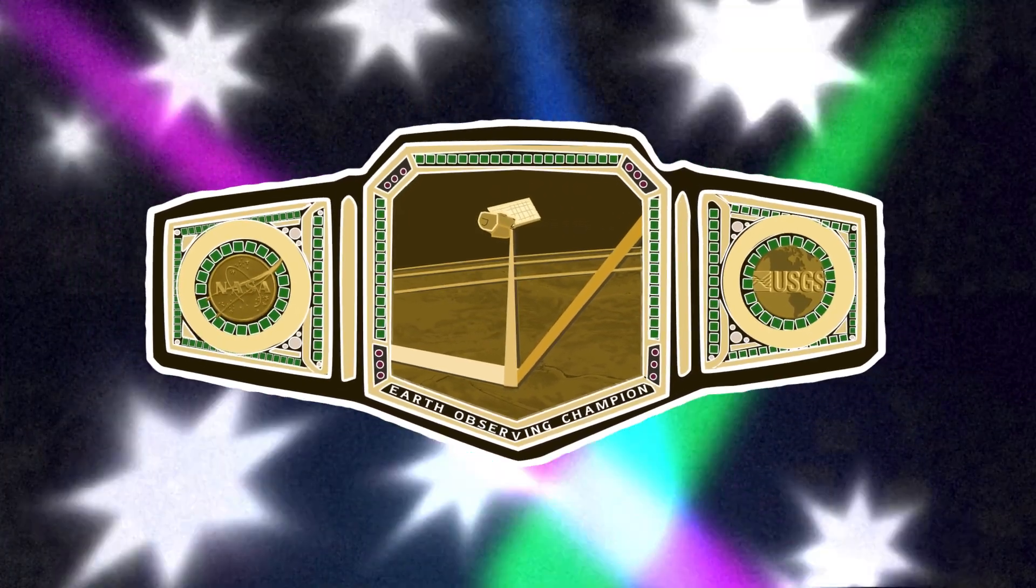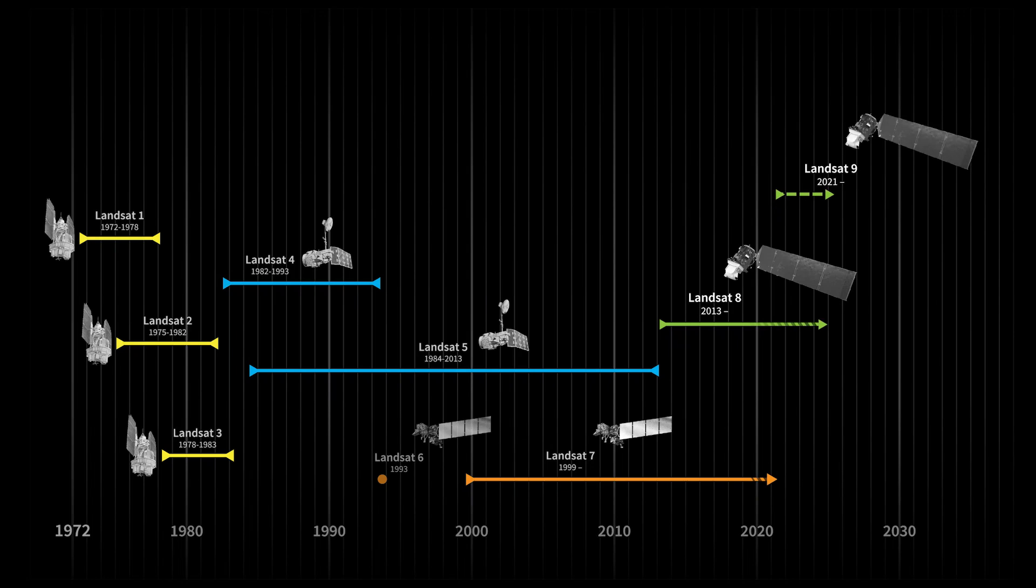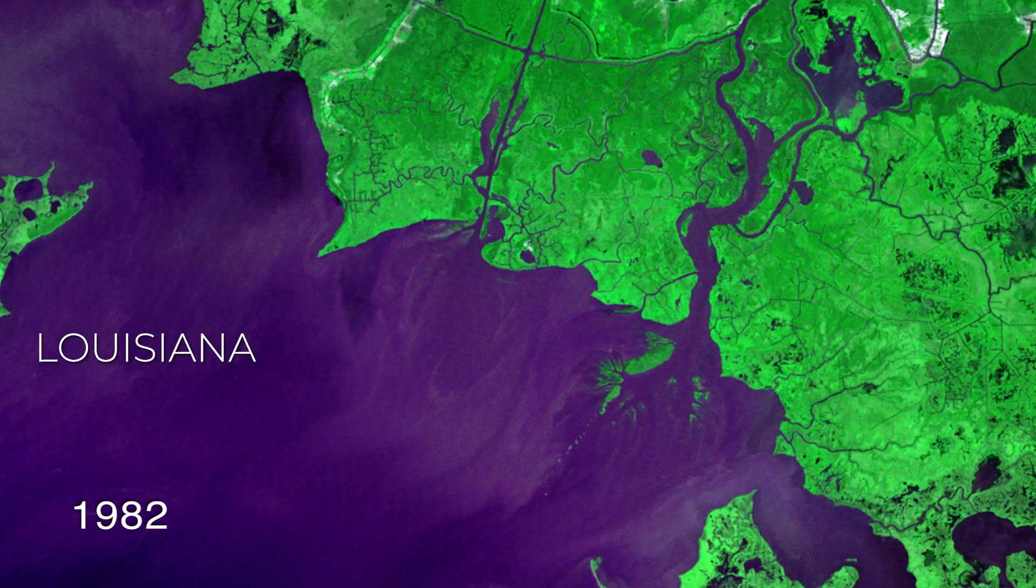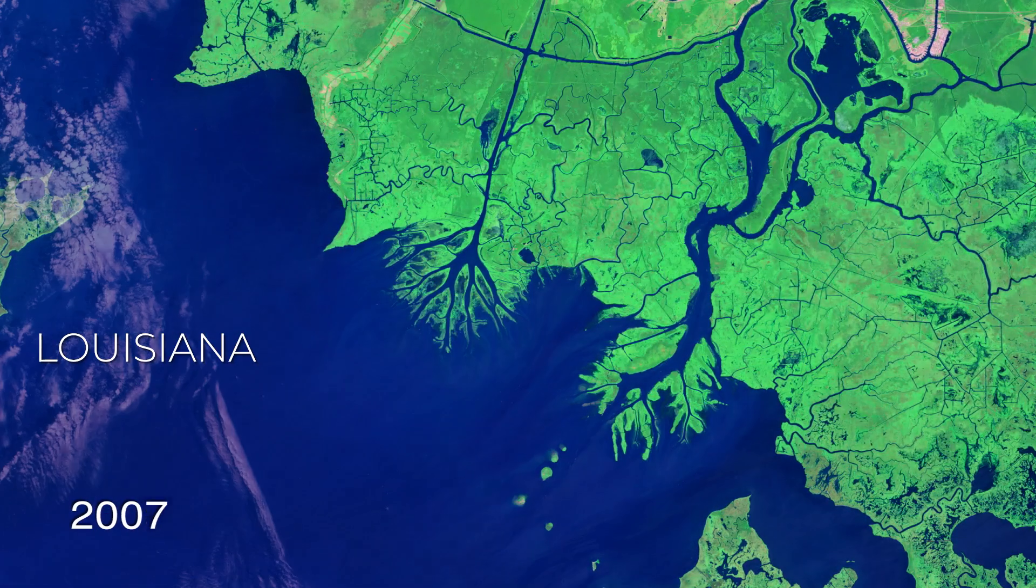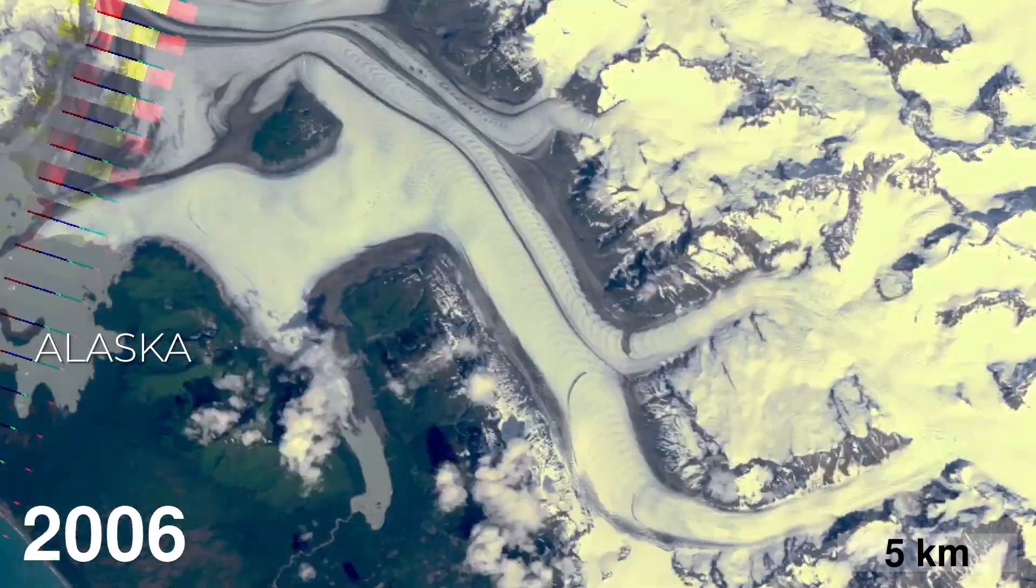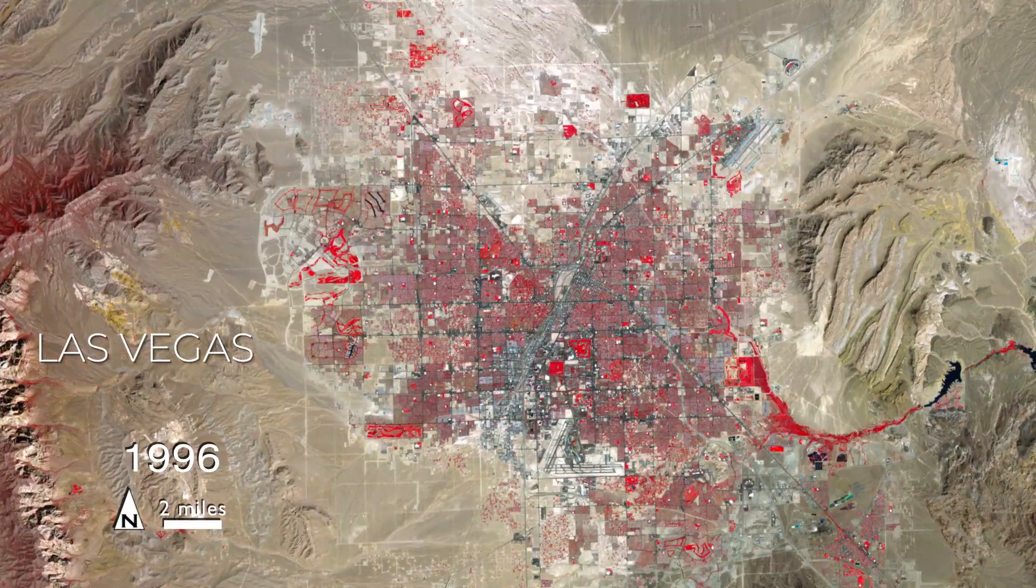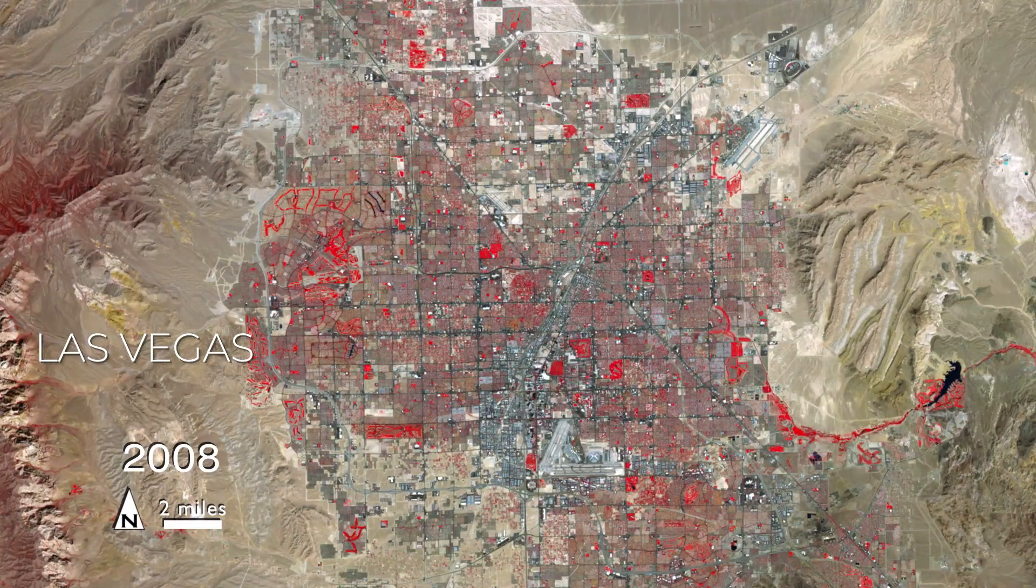Landsat holds the title for the longest continuous space-based record of Earth in existence. That's 50 years of scenes like these, helping scientists and researchers understand how our planet is changing over time.